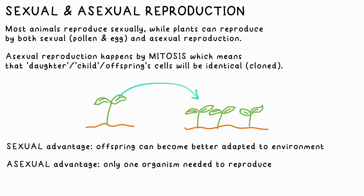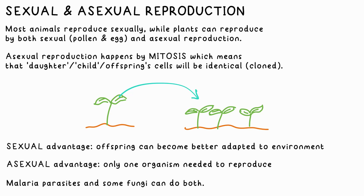However, an advantage of asexual reproduction is that only one parent is needed, so if a plant is on its lonesome, it can still reproduce for the species to survive. Examples of organisms that can do both are the parasite that causes malaria and some fungi.